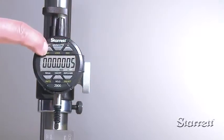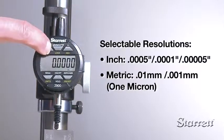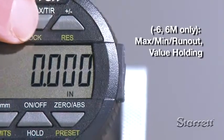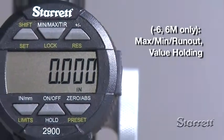Plus the 4 and 6 models add resolution selections to 1 micron. The 6 models also include max min run out value holding which displays captured reading difference.